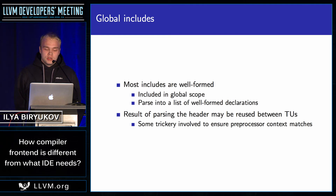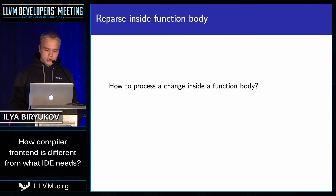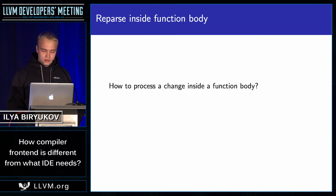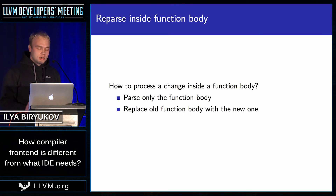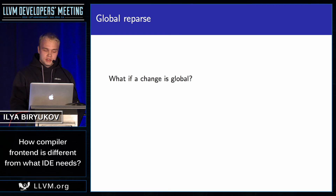This saves the time to preprocess and parse the file on each and every repeated include of the same file, and it turns out to be a significant performance win for us. Let's talk about incremental updates. So what do you do when the user changes some text inside a function? What we can do is just parse the function body and then replace the old function body with the new one, and then reparsing is very fast.